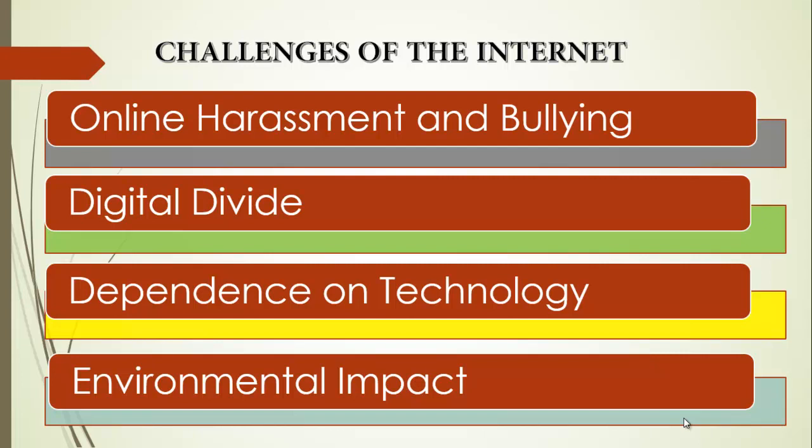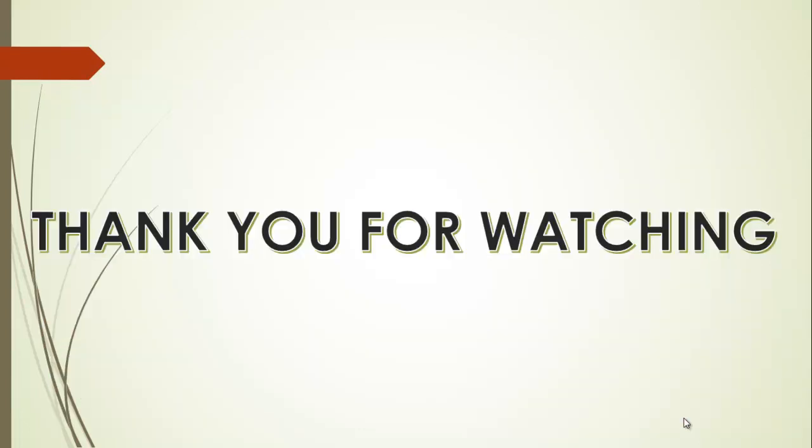Another challenge is environmental impact — the energy and resources required to power the Internet and support data centers have significant environmental implications. For instance, in countries like Nigeria where there is unreliable power supply, many data centers and internet facilities depend heavily on generators. These generators emit carbon, which is harmful to health and damages atmospheric conditions. The more internet facilities and data centers are powered by generators, the greater the negative environmental impact in the long run.